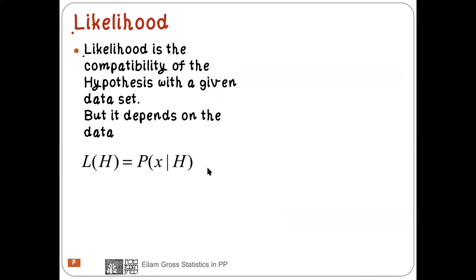I also define the likelihood as the compatibility of the hypothesis with a given dataset. The likelihood of a hypothesis H is the probability to observe the data that we observe given the hypothesis. The likelihood is not a probability of the hypothesis — that would bring us into Bayesian statistics. Rather, assuming the existence of some hypothesis, the likelihood is the probability to see the data that we see; how likely is the hypothesis in light of the data we observe.